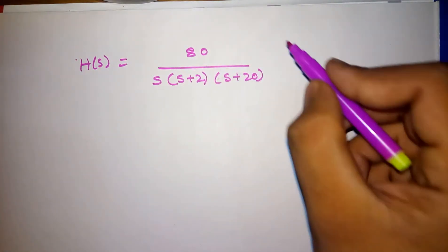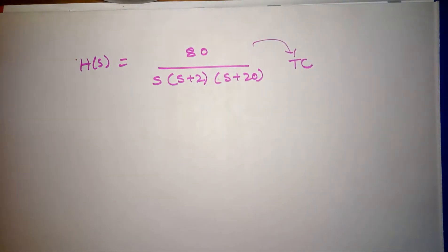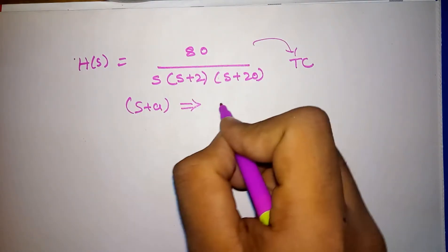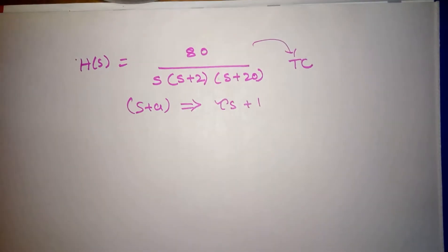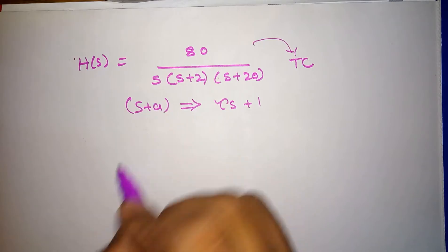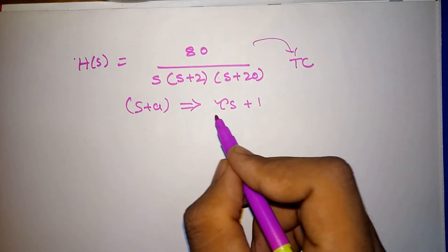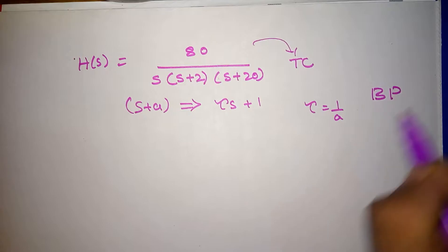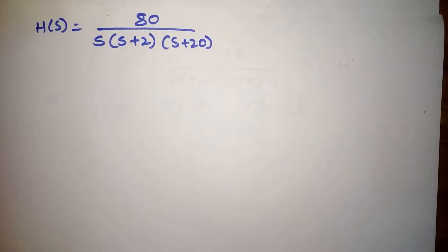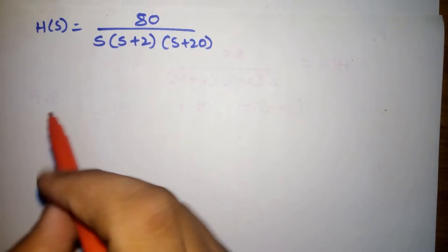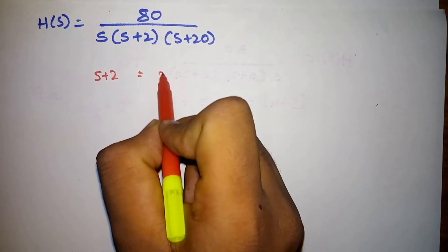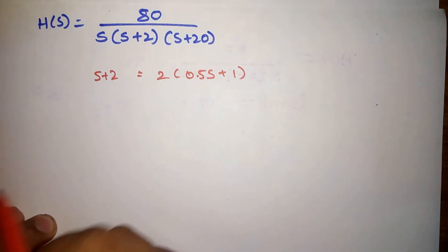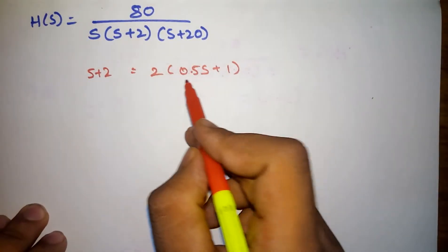We have to convert the given transfer function into time constant format. That is, if we are having (s plus a) type of terms in the transfer function, it should be converted to (τs plus 1). That means we have to take 'a' common out from (s plus a), so the value of τ will be 1/a. This τ is also known as break period. In our transfer function, we have (s plus 2), which we can write as 2 into (0.5s plus 1) — if we take 2 common from (s plus 2), we get (0.5s plus 1).